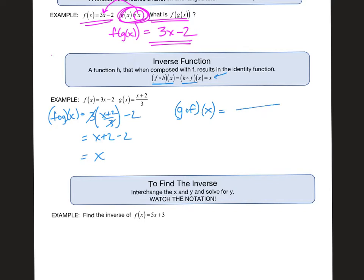Doing it the other way, on the top of the fraction I'm gonna have 3X minus 2 plus 2, all over 3. That cancels with that, which gives me 3X over 3. That cancels with that, which gives me X.